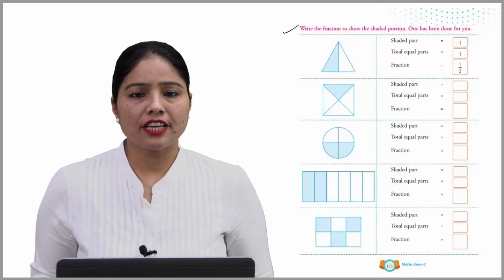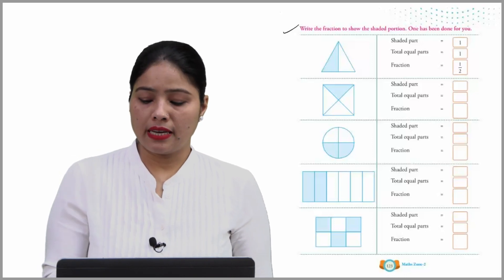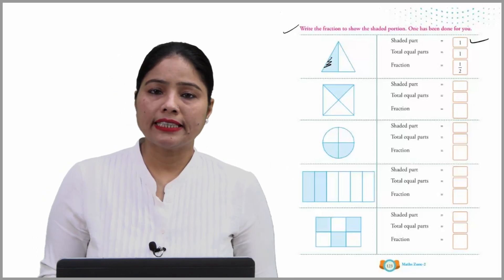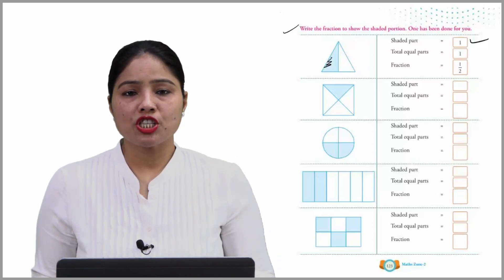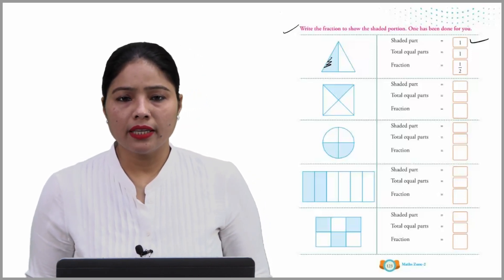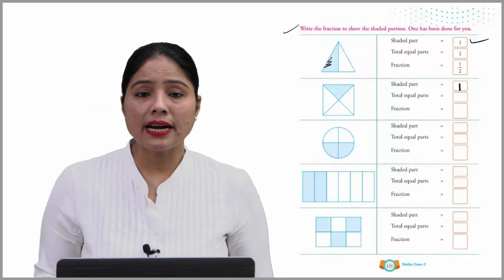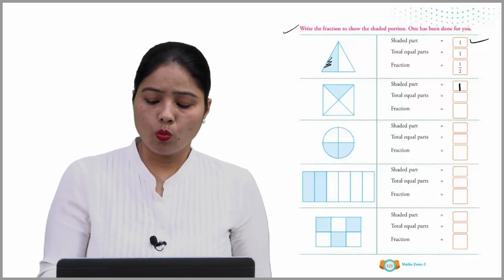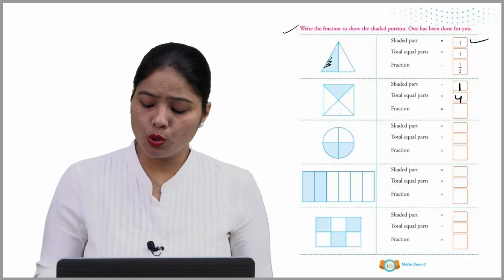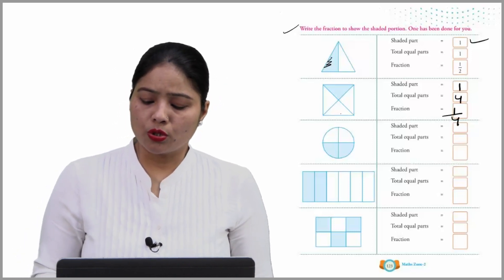Write the fraction to show the shaded portion — one has been done for you. So, this is a triangle. Shaded part हमारा ये है — shaded part हो गया one, total equal parts कितने हो गए? Two. So, fraction हो गया one by two. Second — shaded part कितने हैं? One. And total equal parts कितने हैं? One, two, three, four — four equal parts बन रहे हैं. So, fraction हमारा क्या हो गया बच्चो? One by four — क्योंकि four में से one ही हमारा shaded है. So, these are the other examples — you have to fill them by your own.